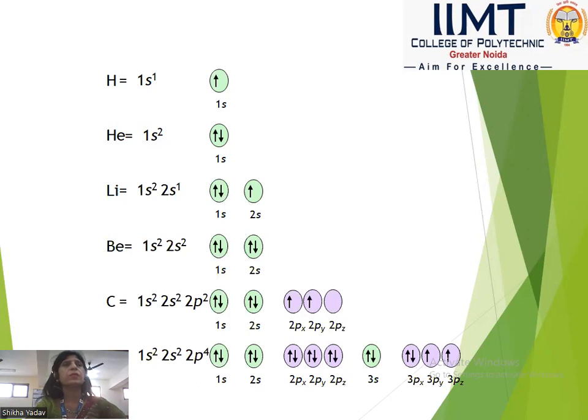Next, beryllium: 1s², 2s². That is 2 electrons in 1s and 2 electrons in 2s.